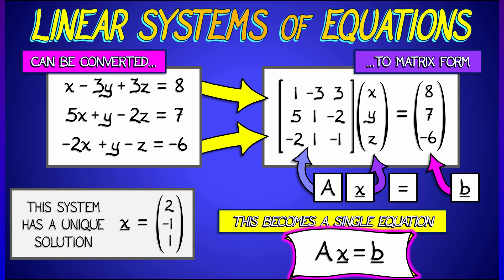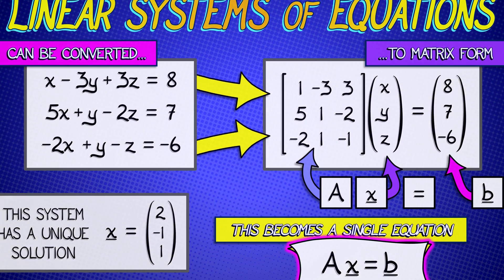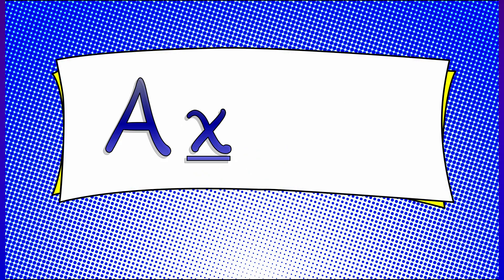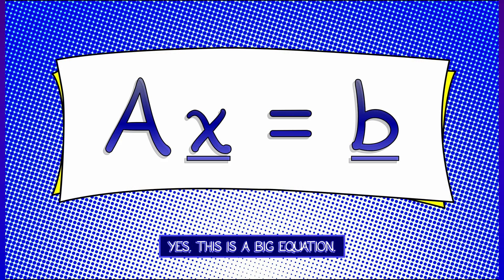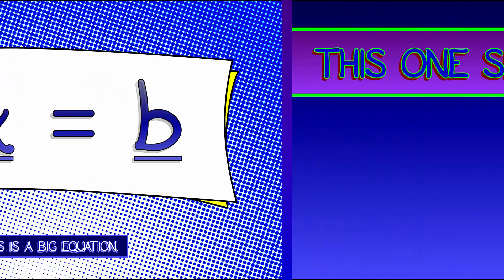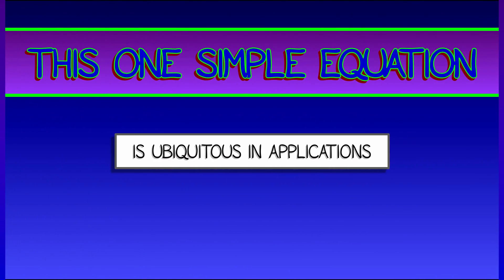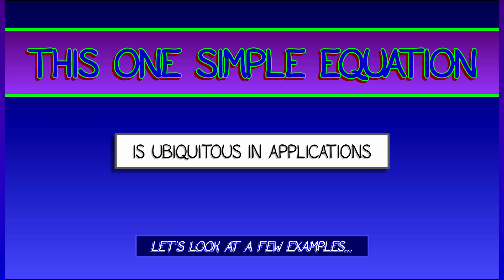Okay, so what do we do with this? Why is this helpful? Well, one reason is that we now have a single equation, a big equation that encodes any system of linear equations that you might write down, independent of how many variables are really going on here. And this one simple equation, Ax equals B, is all over the place in applications.